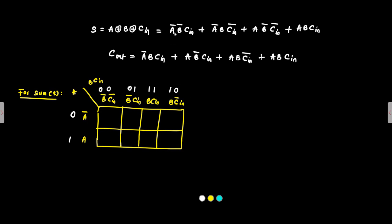For the Sum, the expression is A-bar·B-bar·C-in — so this cell is occupied. Then A-bar·B·C-in-bar — so this cell is occupied. Then A·B-bar·C-in-bar — so this cell is occupied. And A·B·C-in — so this cell is occupied.